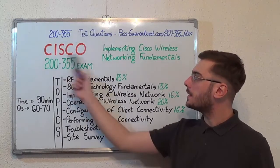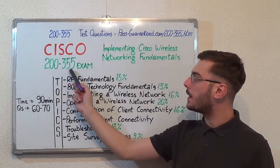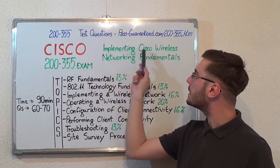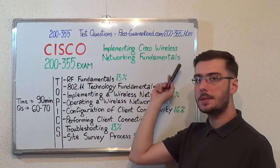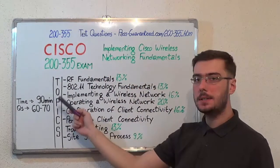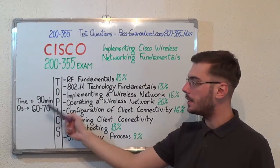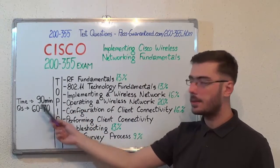Hello everyone, today I will present the CISCO 200-355 Exam: Implementing CISCO Wireless Networking Fundamentals. Here we have some basic test information. The exam duration is 90 minutes, and there are between 60 to 70 questions.